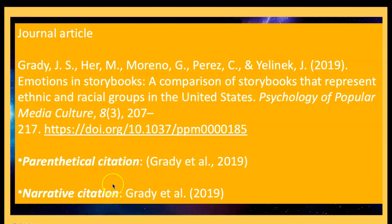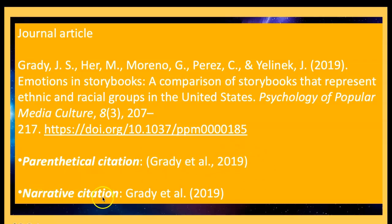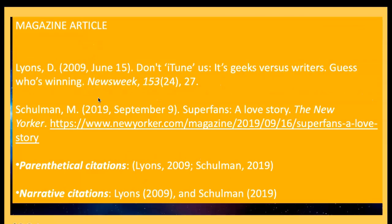There are two kinds of citation: narrative citation and parenthetical citation. For parenthetical citation, the author's name and year of publication go inside the parentheses. For narrative citation, the author's name goes outside the parentheses, but the date of publication goes inside the parentheses. This is how a journal article entry looks.